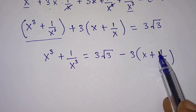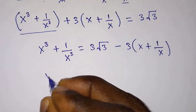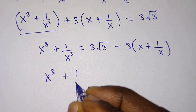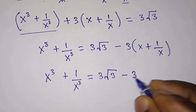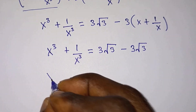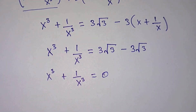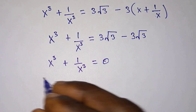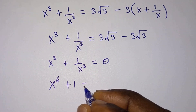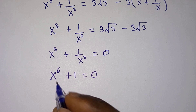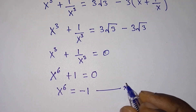But from the problem, we were given x plus 1 over x equals root 3. So we have x to the third power plus 1 over x to the third power is equal to 3 root 3 minus 3 root 3, which equals 0. Multiplying through by x to the third power gives us x to the sixth power plus 1 is equal to 0. Therefore x to the sixth power is equal to negative 1. Let's call this equation star.